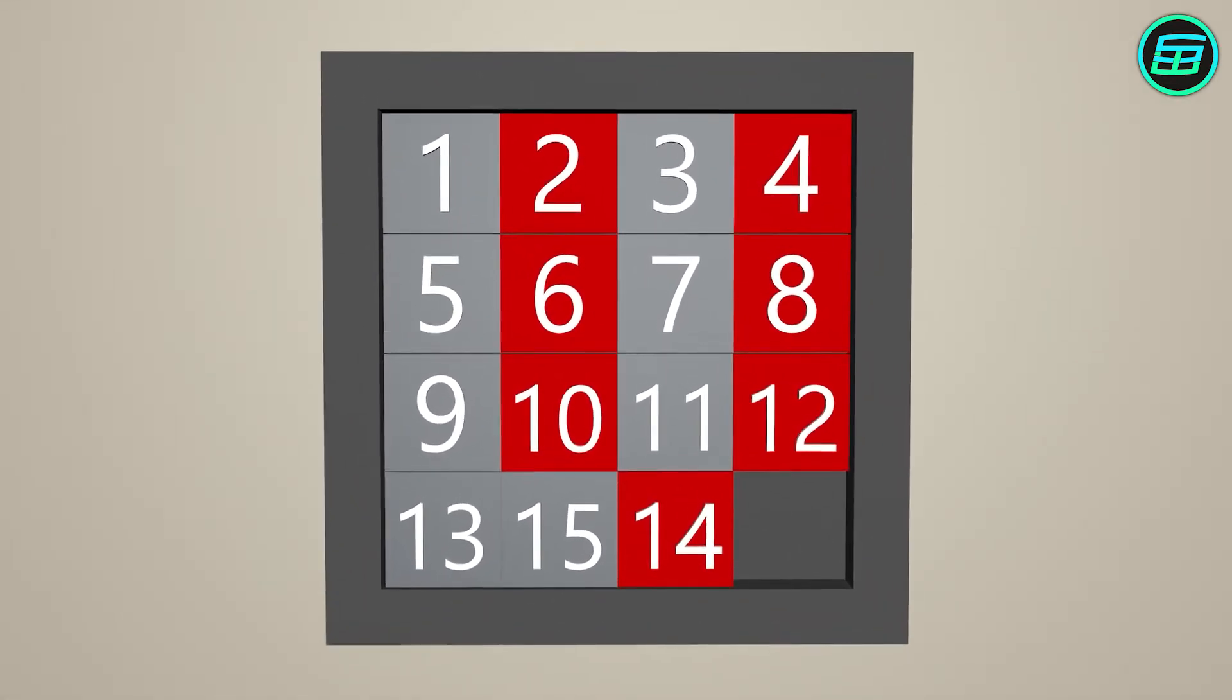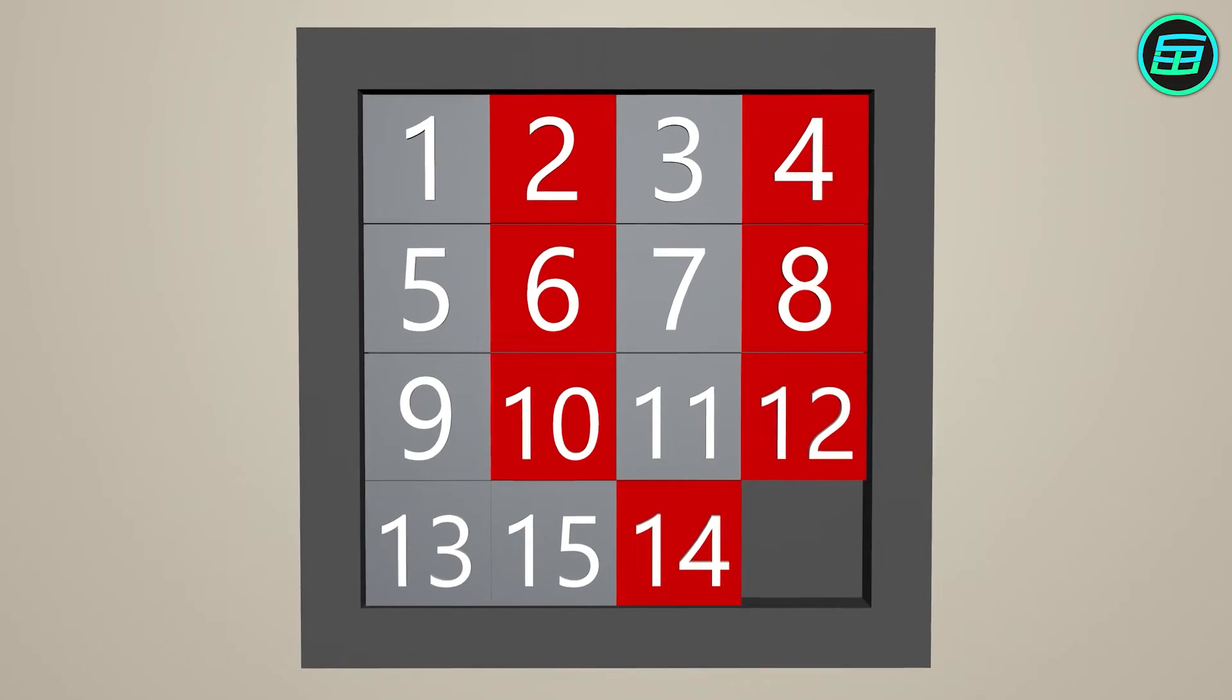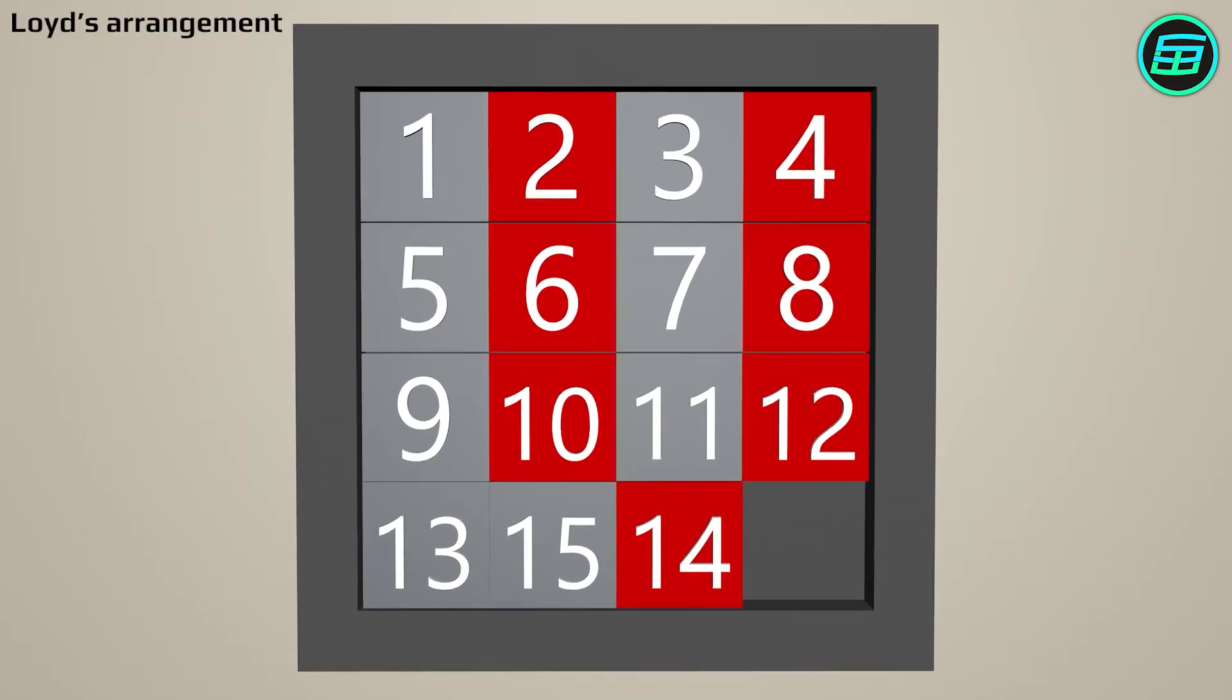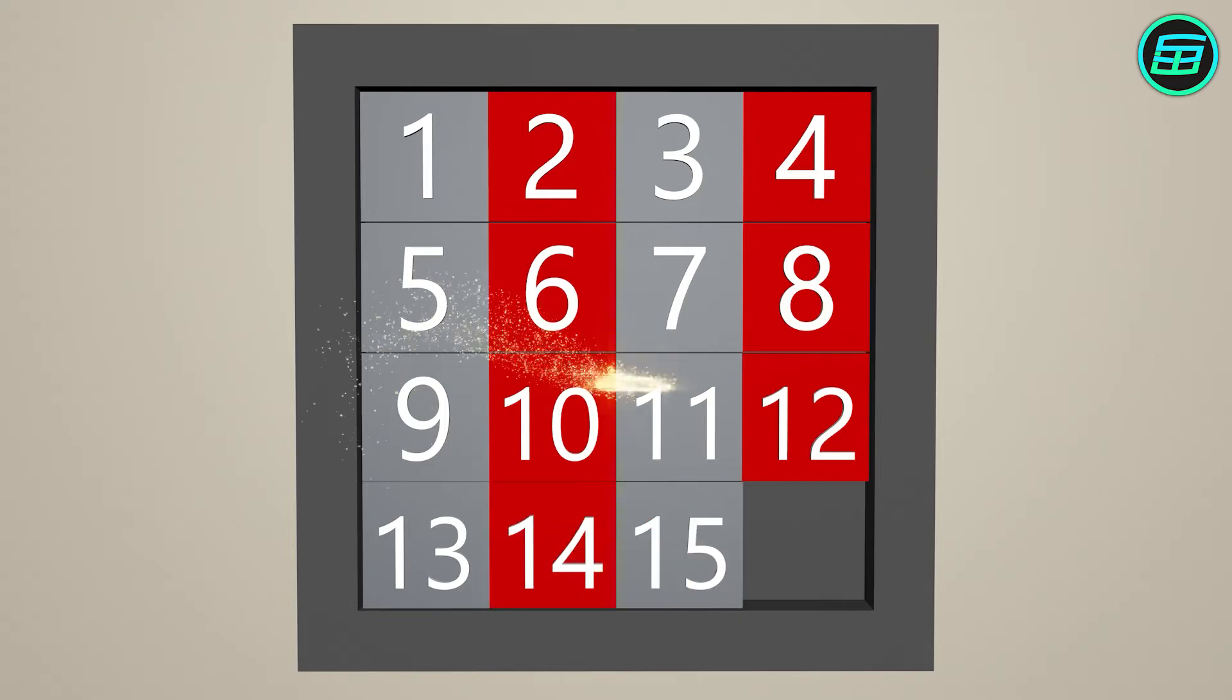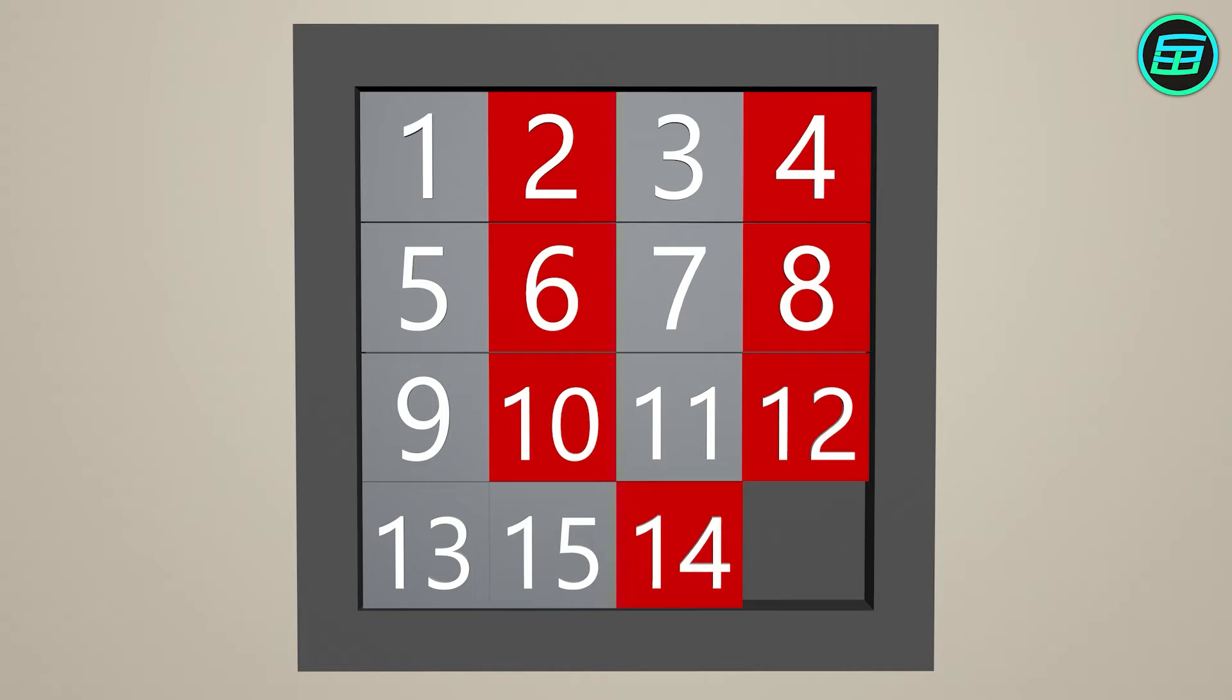The lower right hand square is left empty. The object of the puzzle is to get all the tiles in the correct order. The only allowed moves are sliding counters into the empty square.